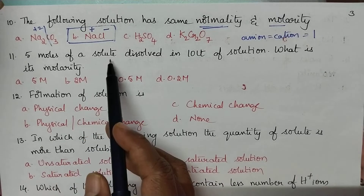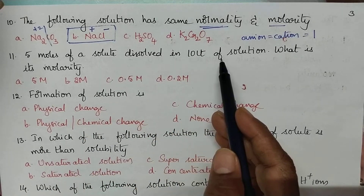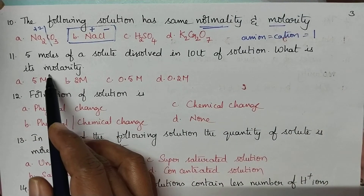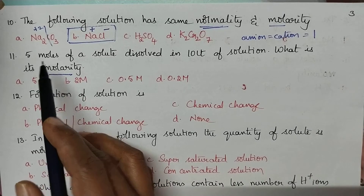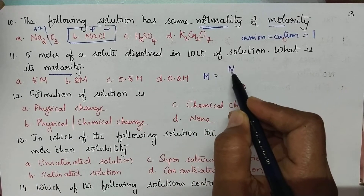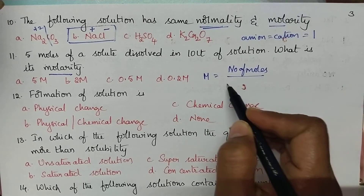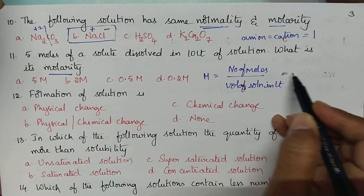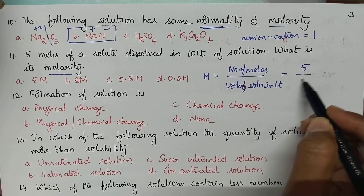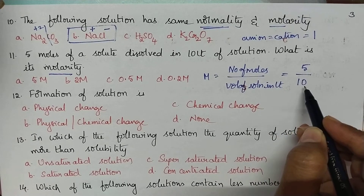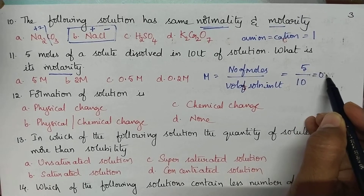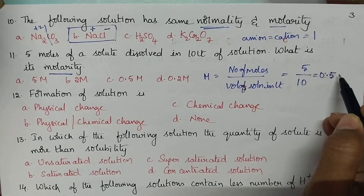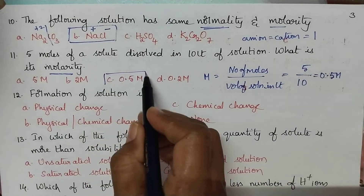5 moles of a solute dissolved in 10 liters of solution — what is its molarity? Molarity = number of moles / volume of solution in liters. Number of moles = 5, volume = 10 L, so molarity = 5/10 = 0.5 M. The right option is C.